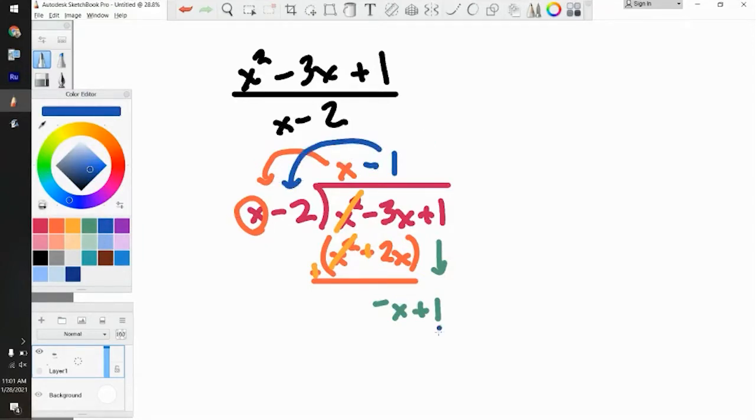So negative 1 times X minus 2 is going to be negative X plus 2. The negative makes that positive. The negative X makes it negative X. And we're subtracting this here. The leading term cancels, and you're left with 1 minus 2, which is negative 1.